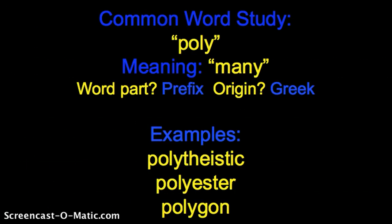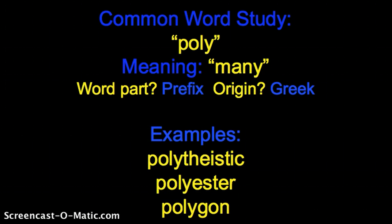Good morning, readers and writers. Today we are doing the common word study: poly. Yesterday we had mono, today we have poly. Poly means many of something. The word part for poly is it is a prefix. If you look at the examples, you can see that it is located on the front of an existing word or concept. So poly is a prefix. The origin, like mono, is Greek.